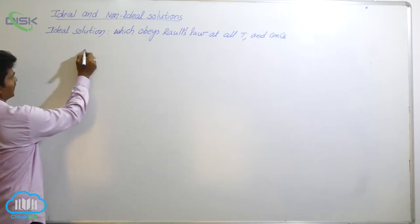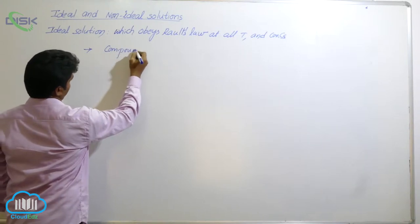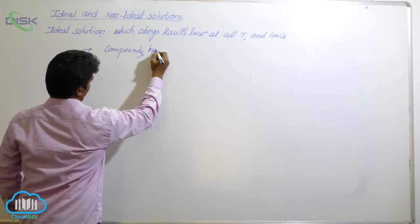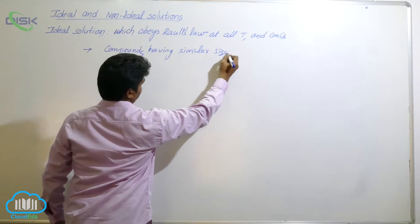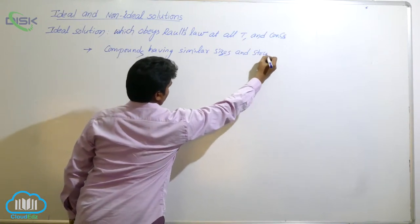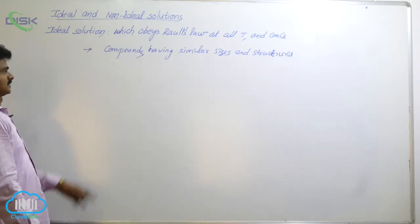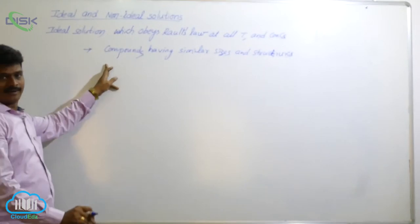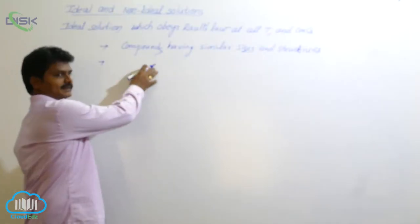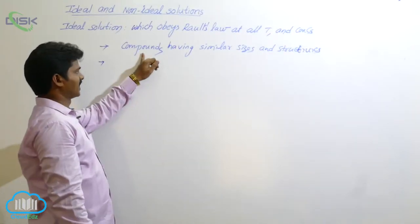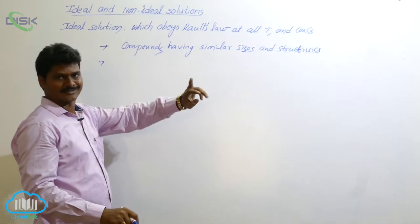An ideal solution is formed by compounds having similar sizes and structures. Let's see the conditions for ideal solutions. To form an ideal solution, the two components must have similar sizes and structures.